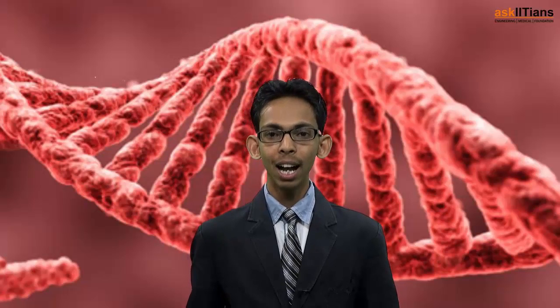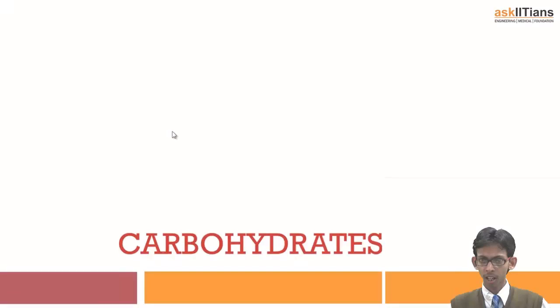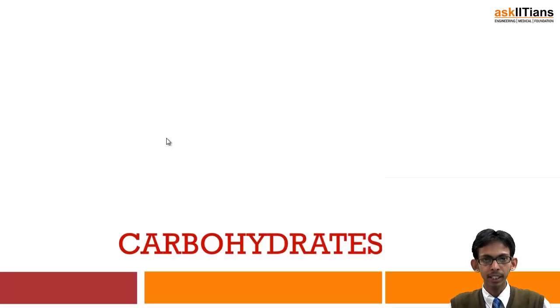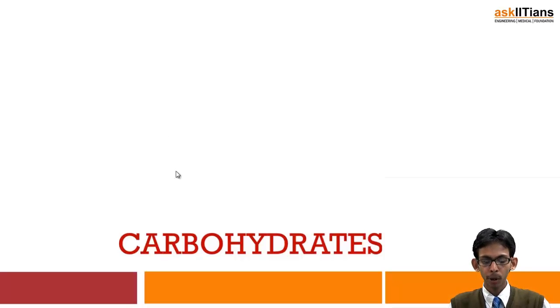So let's start with carbohydrates. Carbohydrates are compounds of carbon and hydrogen and they are basically the source of energy. Glucose, sucrose, fructose — these all are carbohydrates and they provide energy. Whatever we eat is broken down into glucose, and from that glucose we get energy which is used by our body for biological processes.